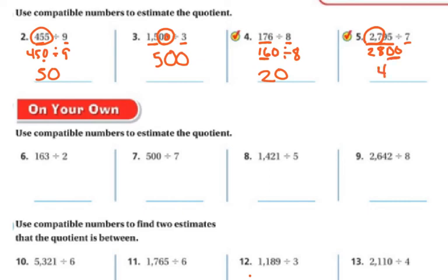7 goes into 28 four times, but it's really 28 hundreds because there's two zeros. So this is really 4 hundreds or 400.